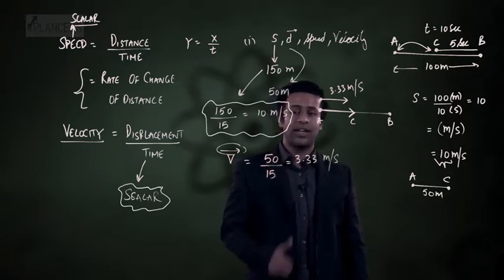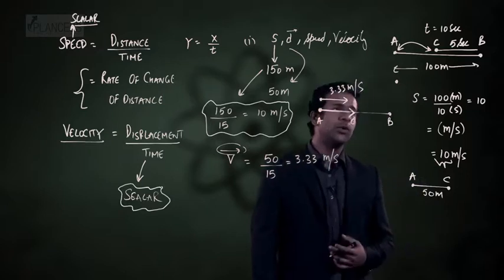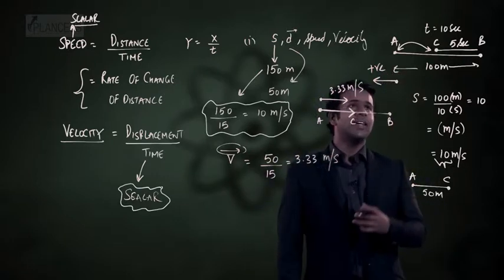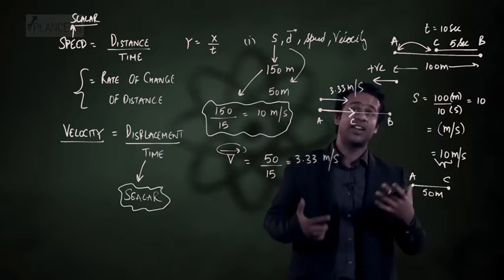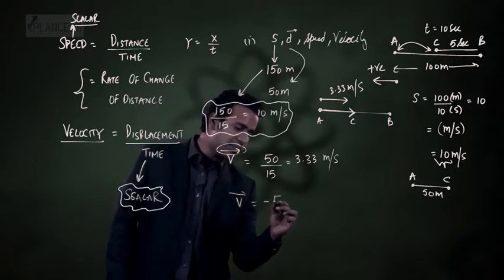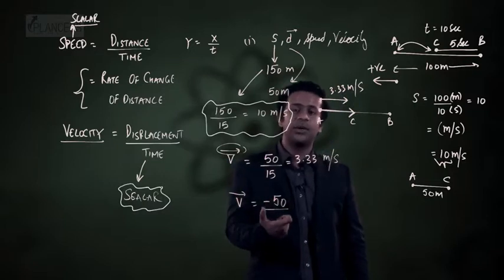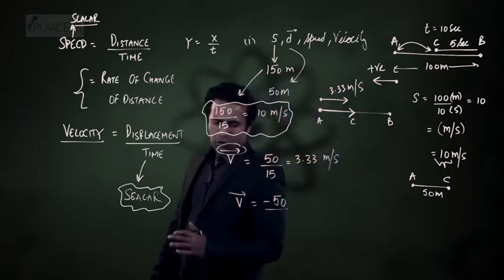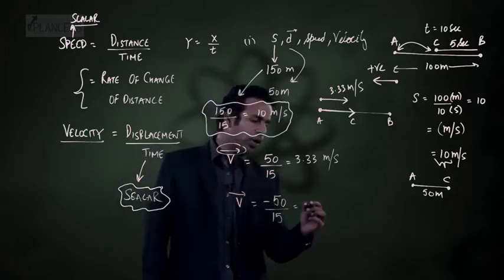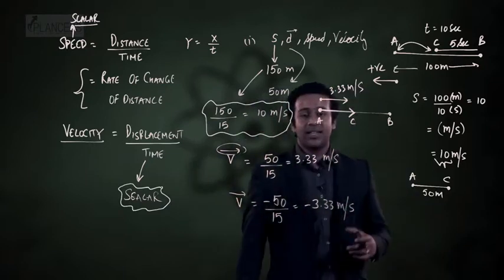To substitute values in equations we need a sign convention. Let's decide a direction to call positive. If we take that direction as positive, the displacement AC is actually opposite to it, so we write displacement as minus 50 meters. Therefore V as a vector equals minus 50 divided by 15, giving velocity as minus 3.33 meter per second.